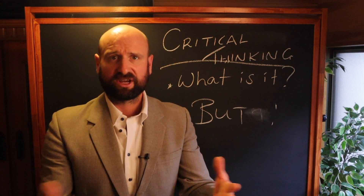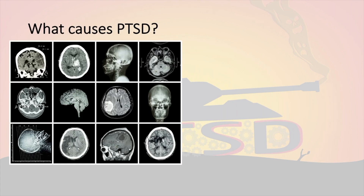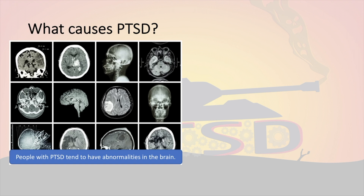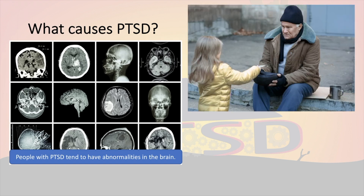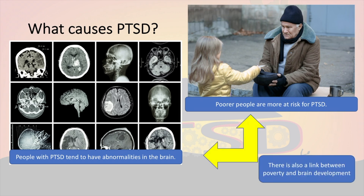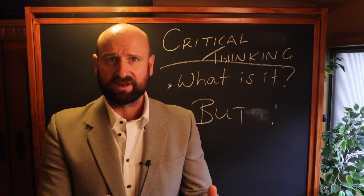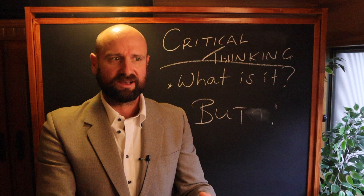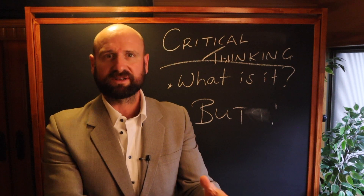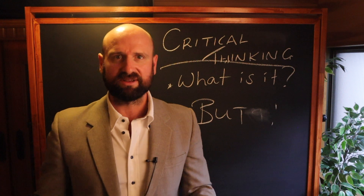If I want to explain something like a psychological disorder such as PTSD, I might look at abnormalities in the brain — but that's not the only factor. I have to ask: but can social or cultural factors also contribute to PTSD? But how did the abnormalities in the brain get there in the first place? And when I look at studies, I might say: but those studies were done on American college participants — could we apply those to other cultures, other backgrounds, other environments?